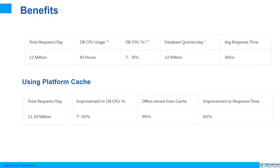Benefits — why exactly do we need to use platform cache? This information has been calculated by Salesforce. For example, if we are making a total of 12 million requests per day, we are using database usage of 83 hours, DB CPU percentage of 7 to 8 percent, and average response time of 30 milliseconds. After using platform cache, there is a good reduction in DB usage as well as heap size — improvement in DB usage is 7 to 10 percent and improvement in response time will be up to 60 percent.